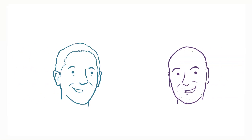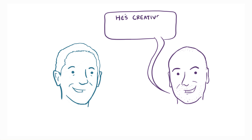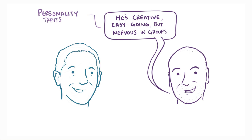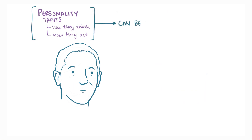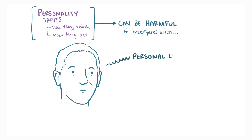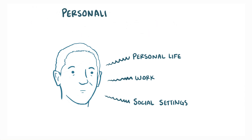If you were asked to describe a friend's personality, you might describe them as generally being a creative type, or easy going, but nervous in groups. Basically, you're trying to summarize the personal traits that make them who they are, either how they think or how they act. Sometimes these thought patterns or behaviors which make up a person's personality can actually be harmful in the sense that they interfere with their day-to-day functioning in their personal life, at work, or in social settings. If this were the case, we would say that the individual has a personality disorder.